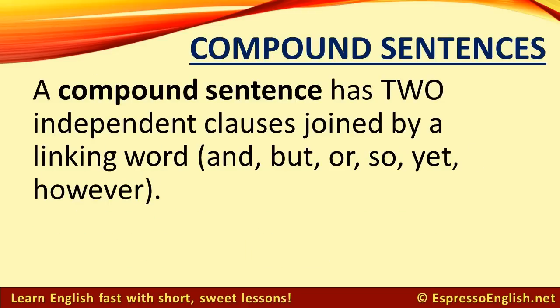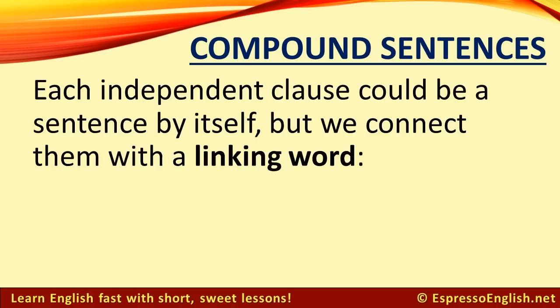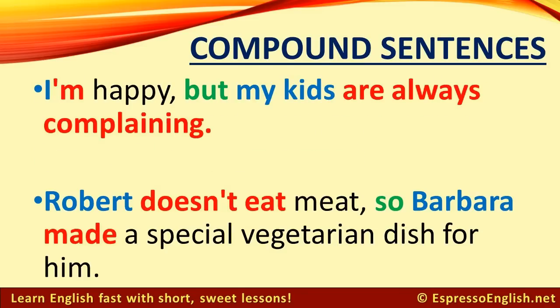A compound sentence has two independent clauses, joined by a linking word, such as: and, but, or, so, yet, and however. Each independent clause could be a sentence by itself, but we connect them with a linking word. For example,